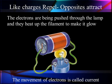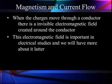The movement of these electrons is called current flow. Current flow is the result of an applied force. Now anytime we have current flow, we're also going to have magnetism present. When charges move through a conductor, there's an invisible electromagnetic field created around that conductor. The field is important because we're going to use it later on and talk about using it to make measurements.